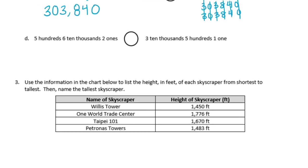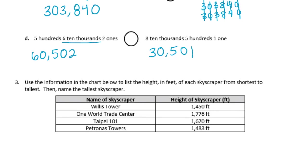Part D: five hundreds, six ten thousands, and two ones — this is a little out of order. The largest place value is the six ten thousands, so I'll put 6 in the ten thousands place, 0 in thousands, 5 in hundreds, 0 in tens, and 2 in ones, giving 60,502. Compared to three ten thousands, five hundreds, one one: that's 30,501. Comparing the ten thousands, 6 is greater than 3, so 60,502 is greater than 30,501.